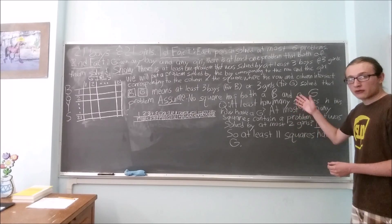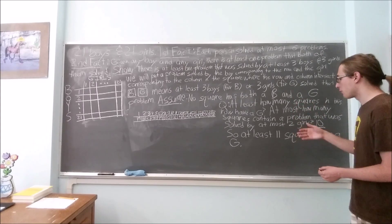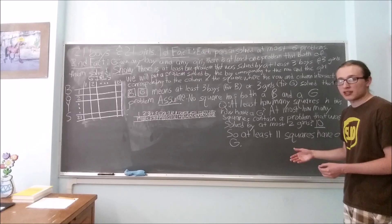If we repeat this process for every row, we see that in every row at least eleven squares need to have a G.